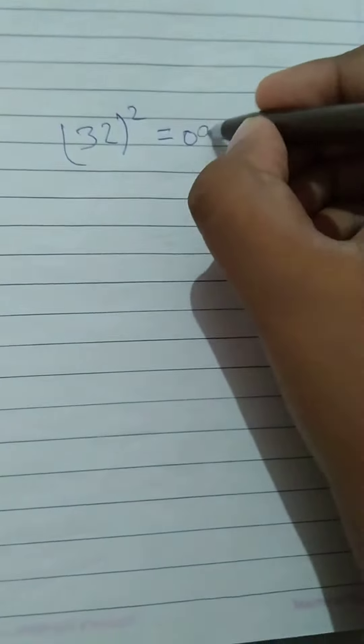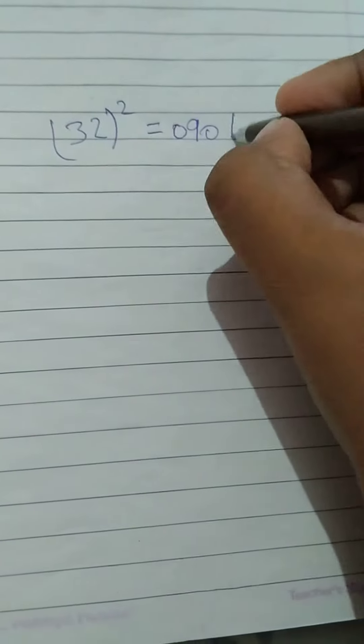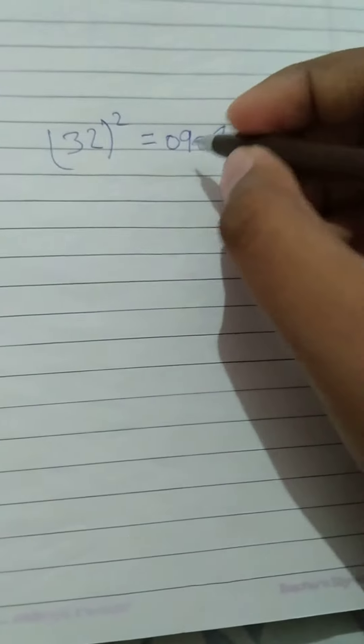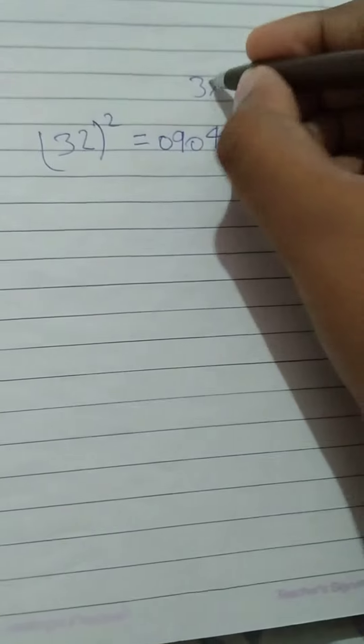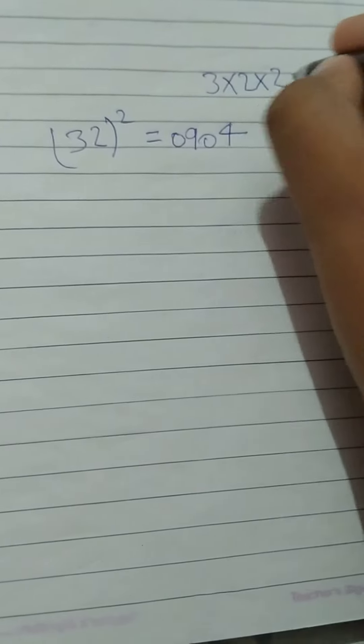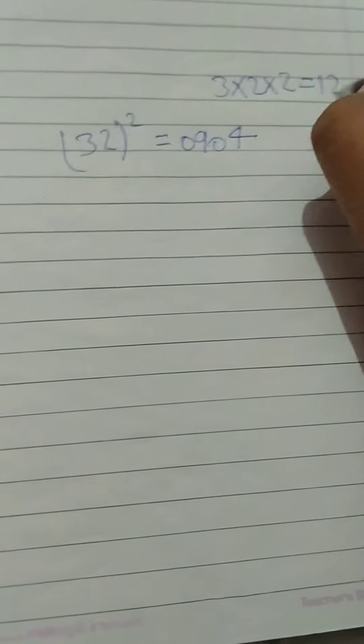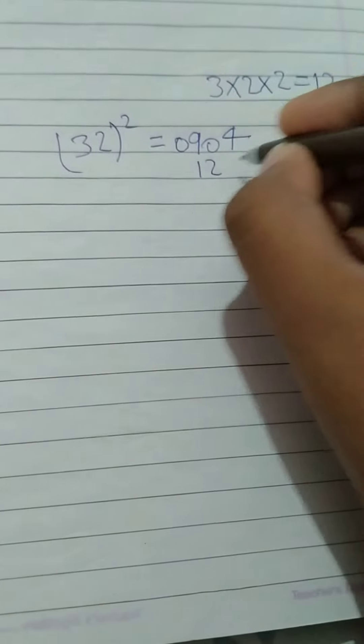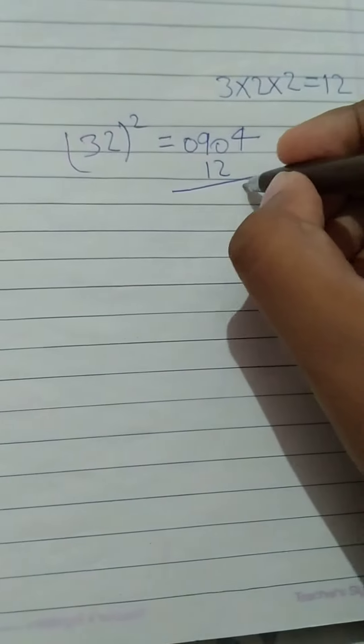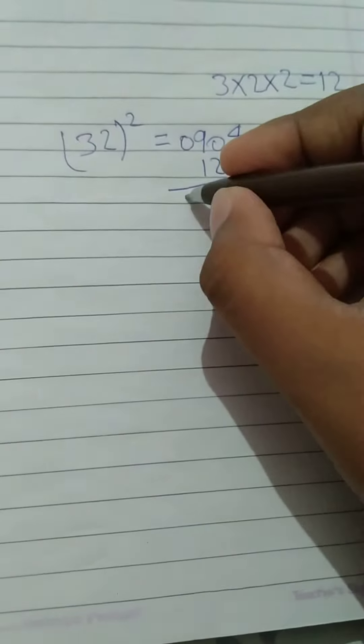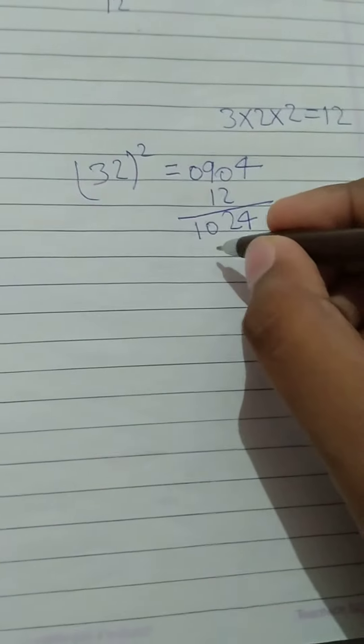Take an example. Let's take 32. Square of 3, 9. Square of 2, 4. Then multiply 3 into 2, into 2, 12. And here, leave this place. Here is our answer.